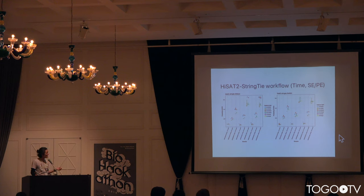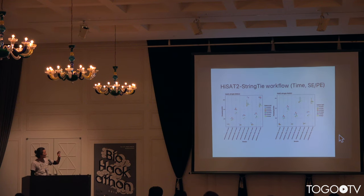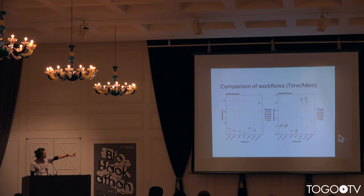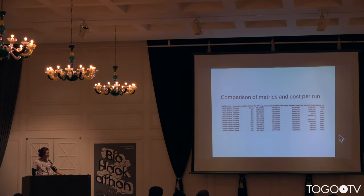This is data from the HiSat2 StringTie workflow, executed on six different instance types with different memory sizes and numbers of cores. The x-axis shows that different sample sizes require different processing times. You can also do a comparison of workloads — the left side indicates the processing time of different workloads across seven workloads. You can see the top two workloads are very slow compared to the others. On the right-hand side, you can see the memory requirements of the workloads. You can also get information like the cost per run of the workload.